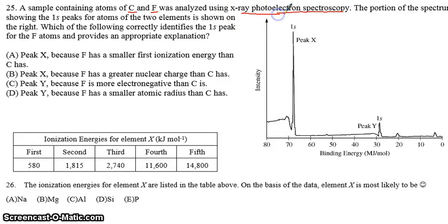So we haven't discussed this and probably won't. I don't have an X-ray photoelectron spectrometer. So no worries there. The portion of the spectrum showing the 1s peak for atoms of the two elements is shown on the right. Which of the following correctly identifies the 1s peak for fluorine and provides an appropriate explanation.